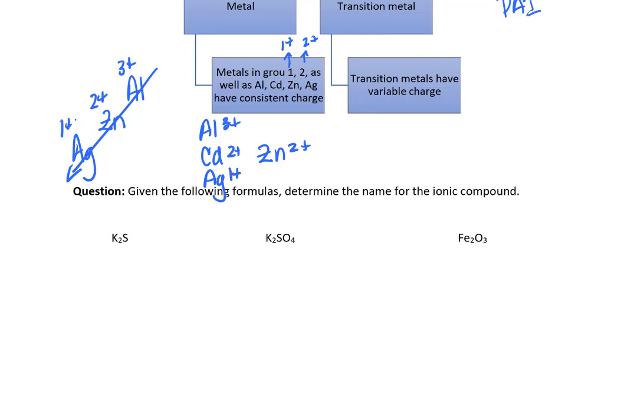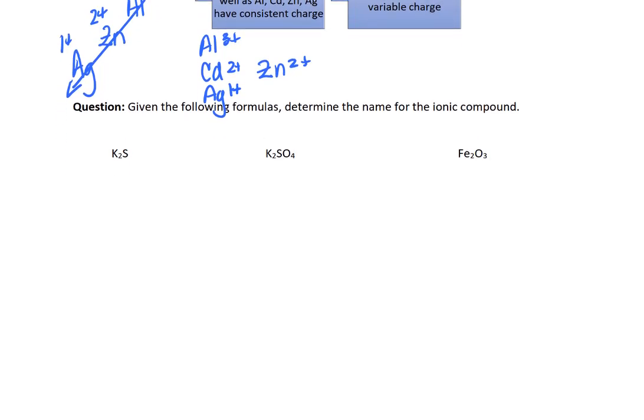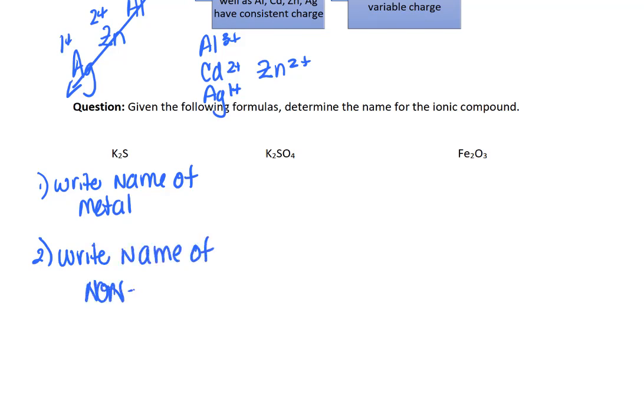So let's look at some of these and determine the name. So if we have something like K2S, and we follow our flow chart, our flow chart asks us, is this a regular old metal that always has the same charge? Or is it a transition metal or a post-transition like tin and lead that can have variable charges? So potassium is in group one, so it always has the same charge. Because it always has the same charge, then all we need to do is write the name of the metal. And then we're going to write the name of the non-metal where we change the ending.